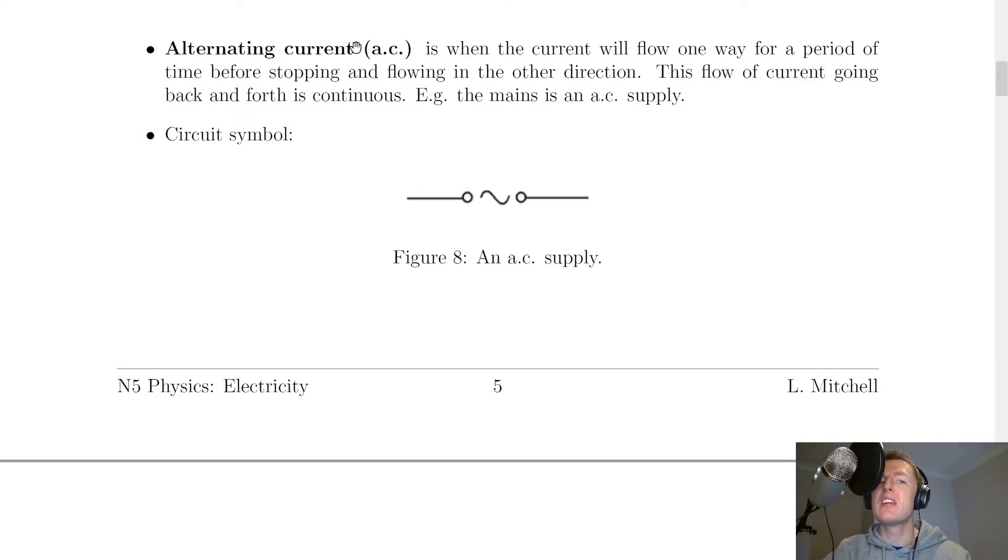If that's DC, then what is AC? Well, alternating current AC is when the current will flow one way for a period of time before stopping and flowing in the other direction. This flow of current going back and forth is continuous. For example, the mains is an AC supply. So every time you plug a device into the wall, you're using alternating current. And in alternating current, current will change direction every fraction of a second.